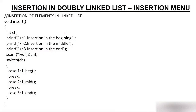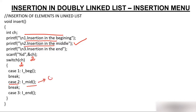The insert operation has a menu: insert at beginning, insert at middle, or insert at end. If you press 1, you insert at beginning; press 2 for middle; press 3 for end. Since our job is for middle, we press 2. The moment we press 2, the variable ch will have 2, the switch jumps to case 2, and in case 2 we call the insert_mid function.